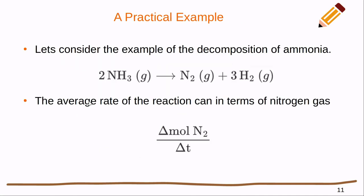Let's consider the example of the decomposition of ammonia. We've got 2 NH3 (g) produces N2 (g) + 3 H2 (g). The average rate of the reaction in terms of the nitrogen gas is going to be the change in moles of nitrogen divided by the time, because there's only a one here so we don't have to consider any kind of fraction. It's a product so it's not negative or anything like that.